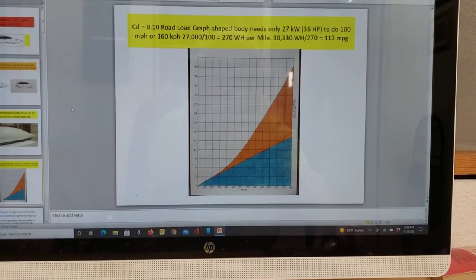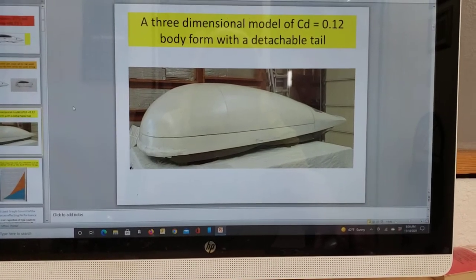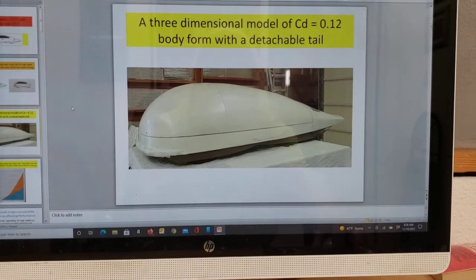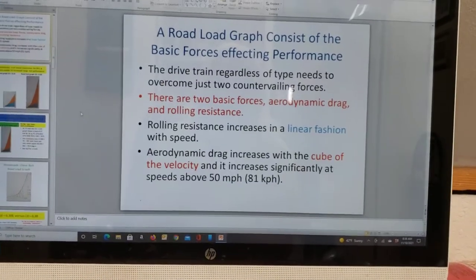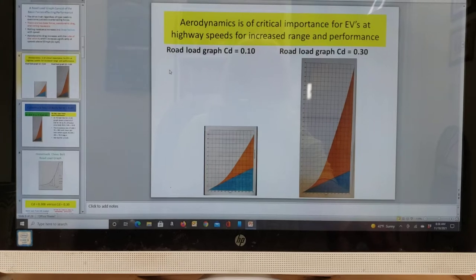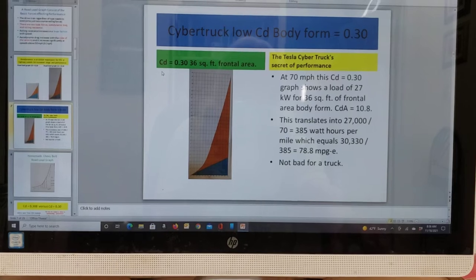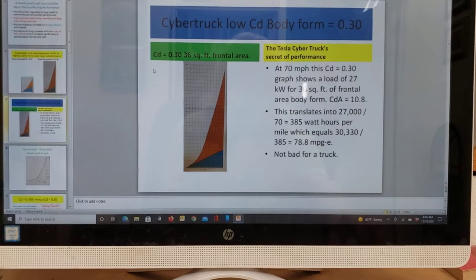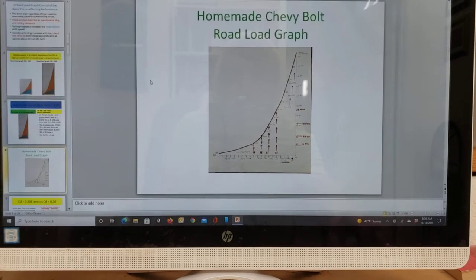There's a three-dimensional model of a coefficient of drag that's really low. We're explaining what the forces are that add up to road load and comparative road load graphs, but we're interested in trailer towing. This is a Cybertruck's road load graph, and here's a homemade Chevrolet Bolt road load graph.